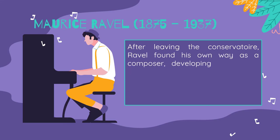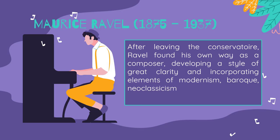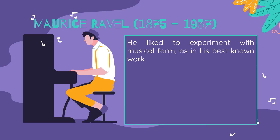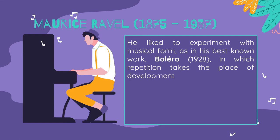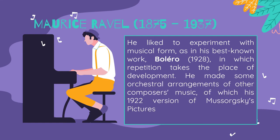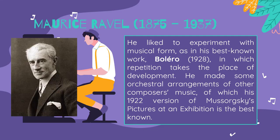After leaving the Conservatoire, Ravel found his own way as a composer, developing a style of great clarity and incorporating elements of modernism, Baroque, Neoclassicism, and in his later works, jazz. He liked to experiment with musical form, as in his best-known work, Bolero, in which repetition takes the place of development. He also made orchestral arrangements of other composers' music, of which his 1922 version of Mussorgsky's Pictures at an Exhibition is the best known. This is Maurice Ravel.